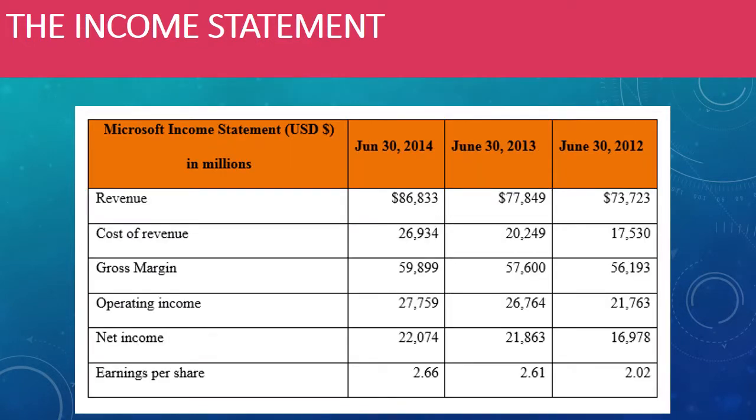The income statement also shows that Microsoft is in a good financial position. We can see that Microsoft increased from 73,723 million in 2012 to 86,833 million in revenue in 2014. The cost of revenue increased, but not that significantly. Gross margin also increased, operating income, net income, and the increase in earnings per share was not that significant.